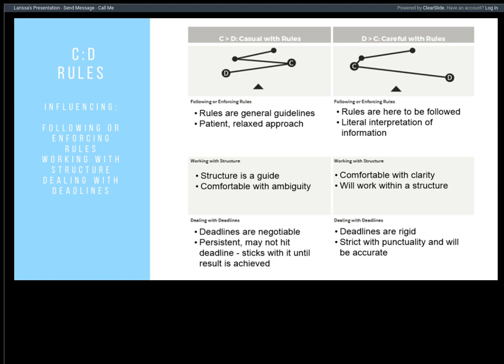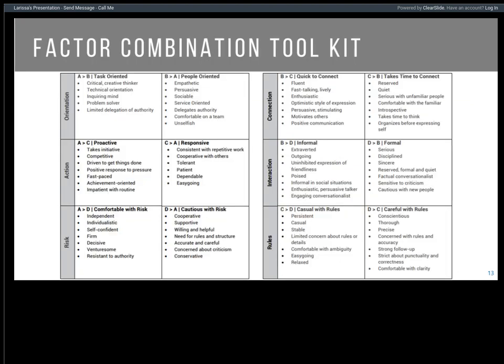There is a factor combination toolkit available to you in Catalyst. From your dashboard, in the bottom right-hand tile, just type in 'factor combination toolkit' or even just 'factor combination' and it will come up. You don't have to remember all of this — there's a good reminder in the system for you on what each of these means.